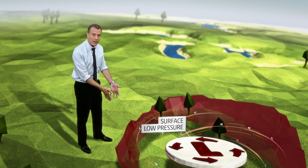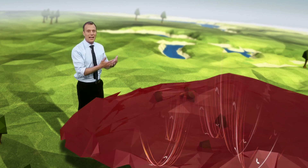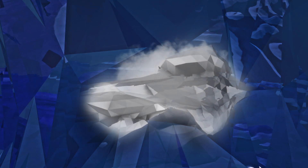It can't go down, so it's forced up. And it's that lift that again forms clouds and thunderstorms, and the greater potential for tornadoes.